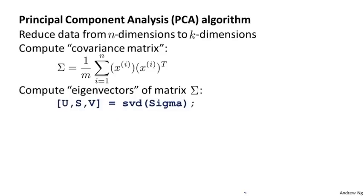Let's say we want to reduce the data from n-dimensional to k-dimensional. What we're going to do is first compute something called the covariance matrix, commonly denoted by the Greek capital sigma. It's a bit unfortunate that the Greek sigma looks exactly like the summation symbol — this sigma denotes a matrix, while this here is a summation symbol. Hopefully it will be clear from context which is which.